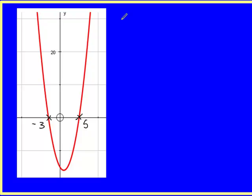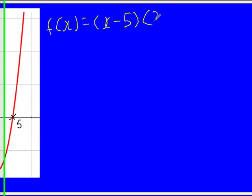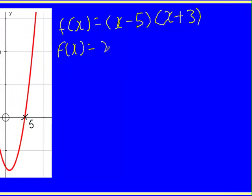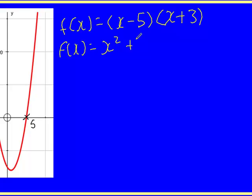what we'd have is f(x) equals (x - 5) and this root here is (x + 3). If I expand this, we get x² + 3x - 5x - 15.